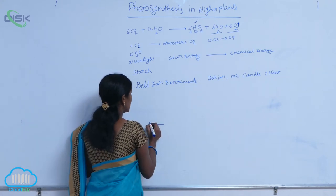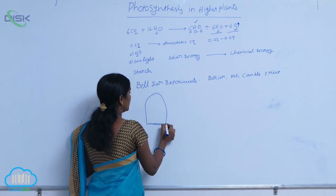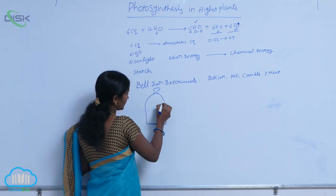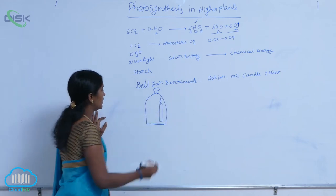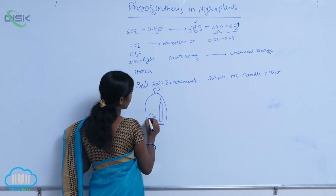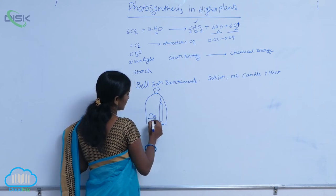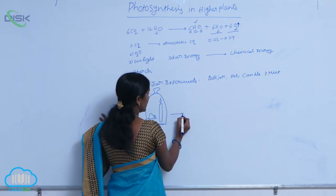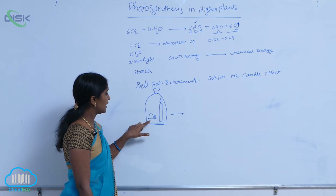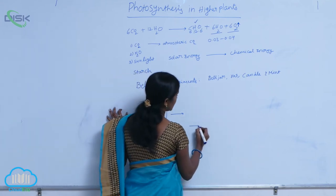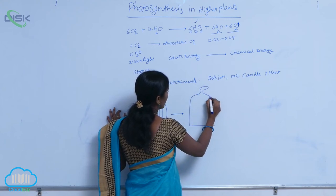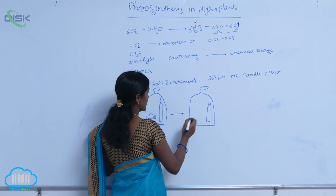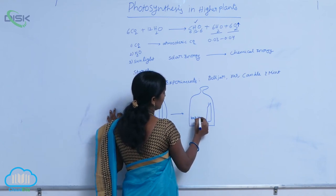Priestley conducted this experiment in serial order. First, he took a clean bell jar. Within the bell jar, he lit a candle and kept a rat inside. At the first level, the candle is lit and the rat is alive. But after a few minutes, the candle burns off and the rat dies.